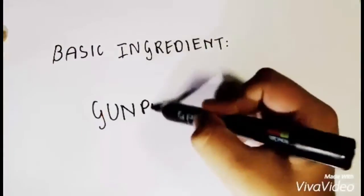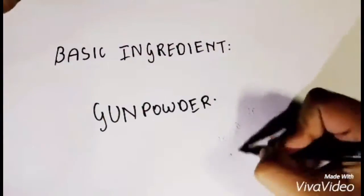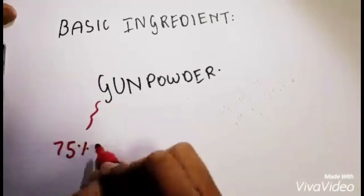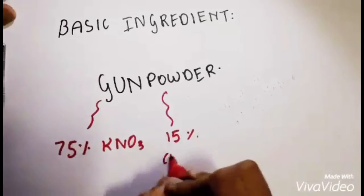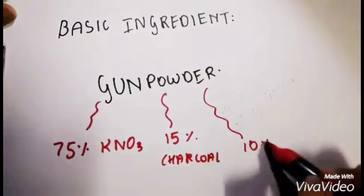The very basic ingredient in each of the firecrackers is gunpowder. Gunpowder consists of 75% potassium nitrate, 15% charcoal, and 10% sulphur. Now that we are done with the ingredients, let's get to some fireworks.